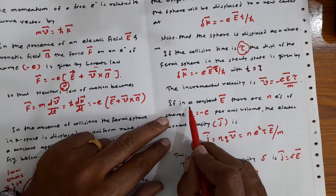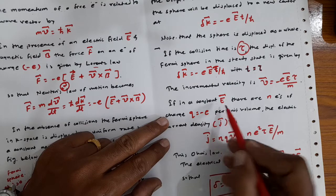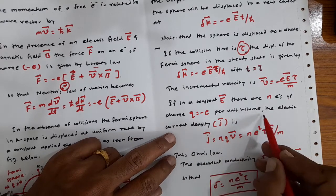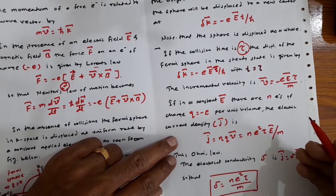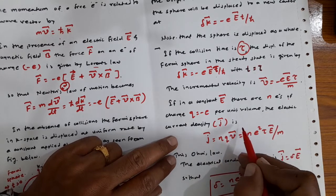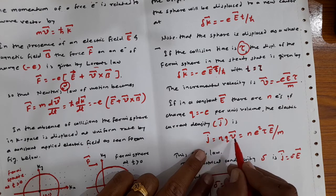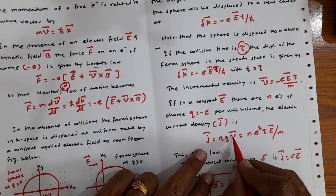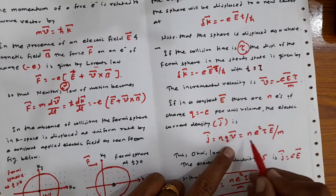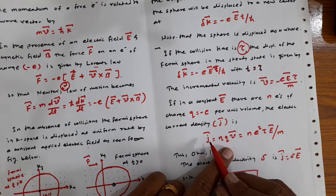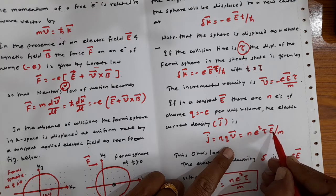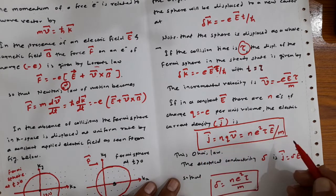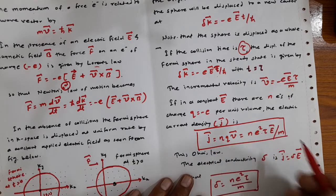In a constant electric field Ē, suppose there are n electrons per unit volume each with charge −e. The electric current density j̄ = nqv̄ = −nev̄. Substituting the incremental velocity, the current density becomes j̄ = ne²τĒ/m. This is nothing but the statement of Ohm's law, which we can write as j̄ = σĒ.